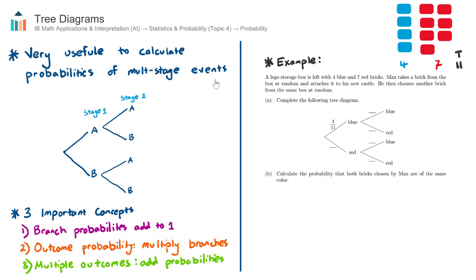Let's complete part A. We're asked to complete the following tree diagram, and this touches on the first important concept: the branch probabilities add to one. In the first stage, Max's first selection, the probability of selecting a blue brick will be the four blue bricks available out of the total of 11, so it's 4/11. The probability of selecting a red brick will be 7/11.